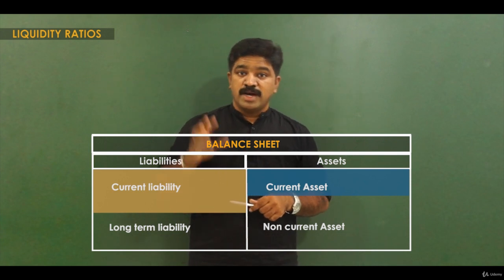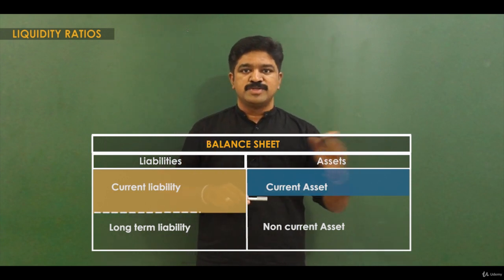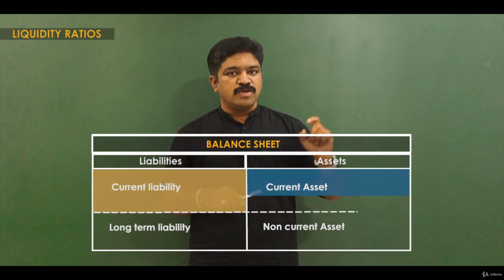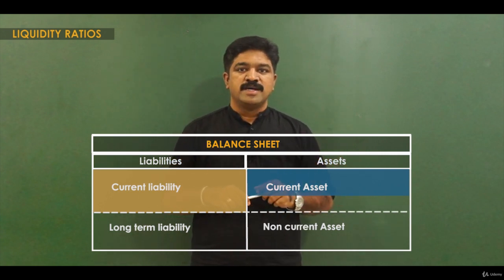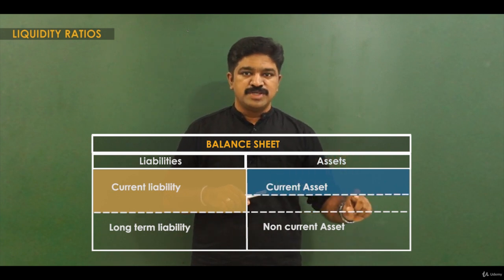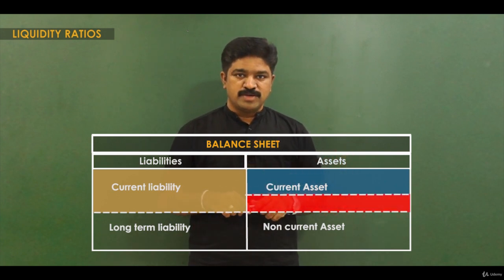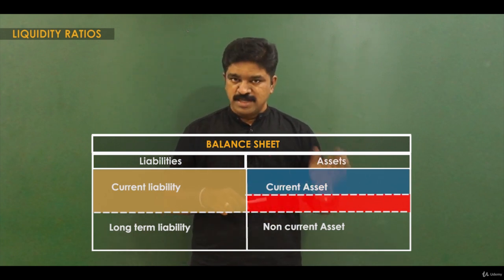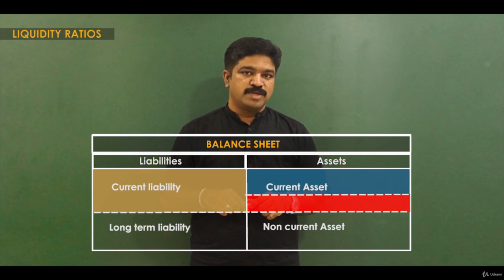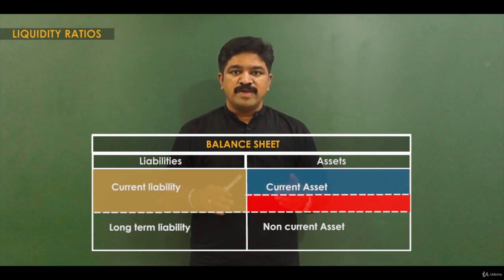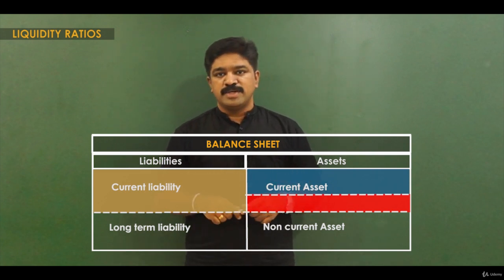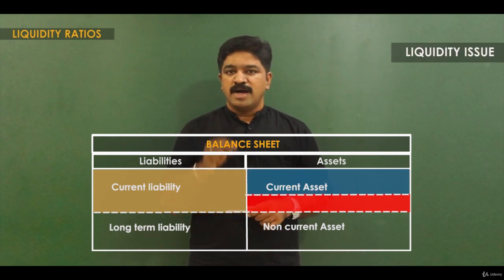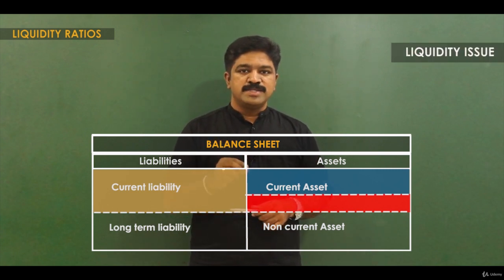Let's say current assets are only this much — it means now you are in trouble. Why? Your current liability is more than your resources; that is, you have to pay more but for paying more you have less current assets. There is a region where you are actually going to be in trouble. You have to pay more but you have less — it means you are in a danger zone where you do not have resources to pay your current liabilities.